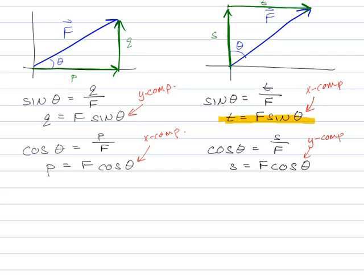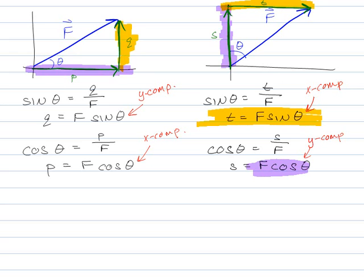So don't go memorize, say well the X is always this one and the Y is always this one. Remember it more in terms of opposite and adjacent. So in all cases, sine is the opposite of the angle. Don't worry about whether it's X or Y. It's the one that's opposite. Cosine is the one that's adjacent. So sometimes it'll be the X and sometimes it'll be the Y, but it'll always be the one that's adjacent.